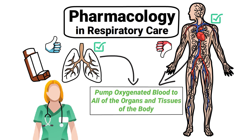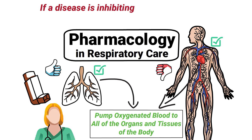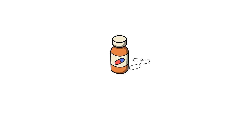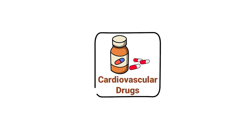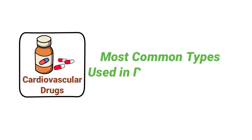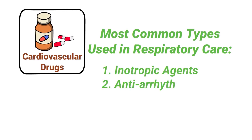That is because these two work together to pump oxygenated blood to all of the other organs and tissues of the body. Therefore, if a disease is inhibiting the functionality of the heart, it could inadvertently affect the lungs as well — all of that to emphasize the fact that cardiovascular drugs are an important class of medication to learn and understand. The most common types used in respiratory care include inotropic agents, antiarrhythmic agents, vasodilators, antianginal drugs, and vasopressors.